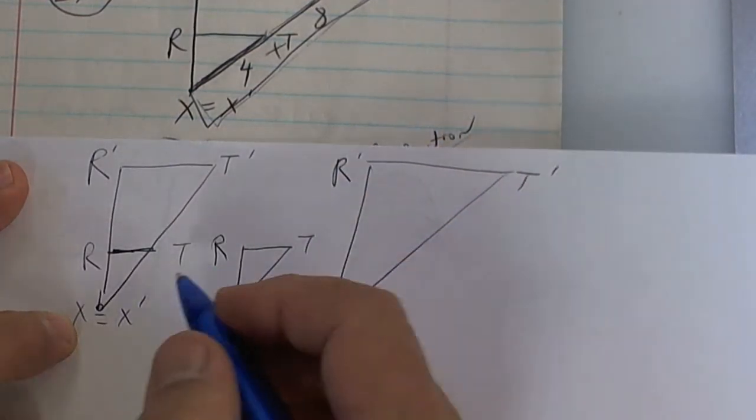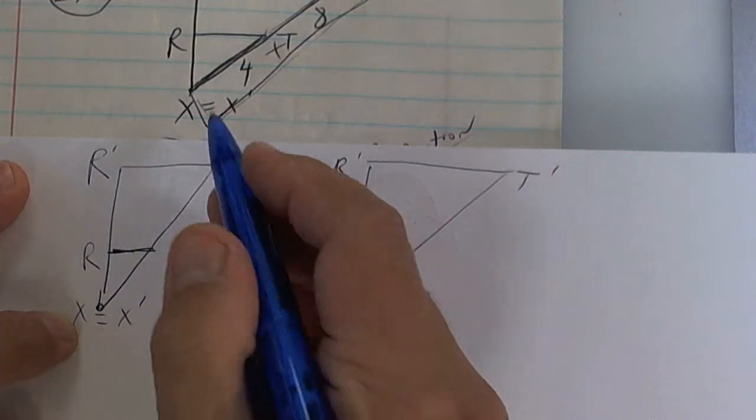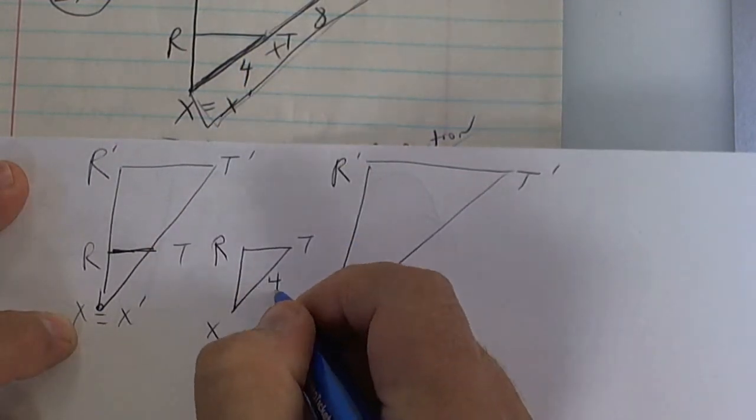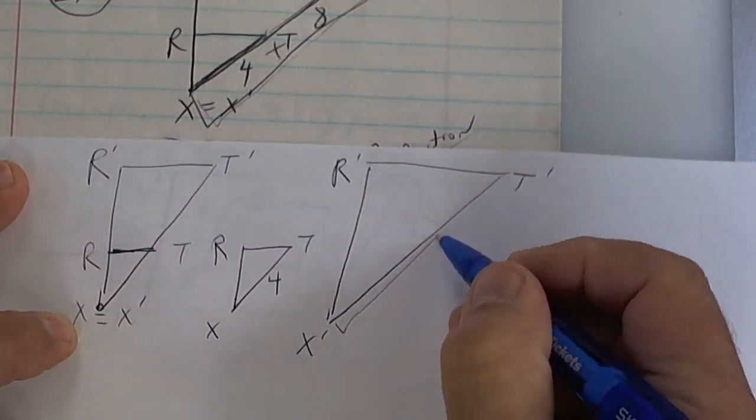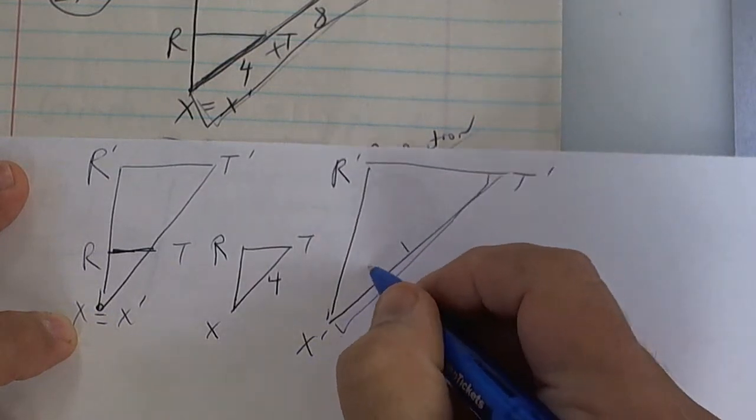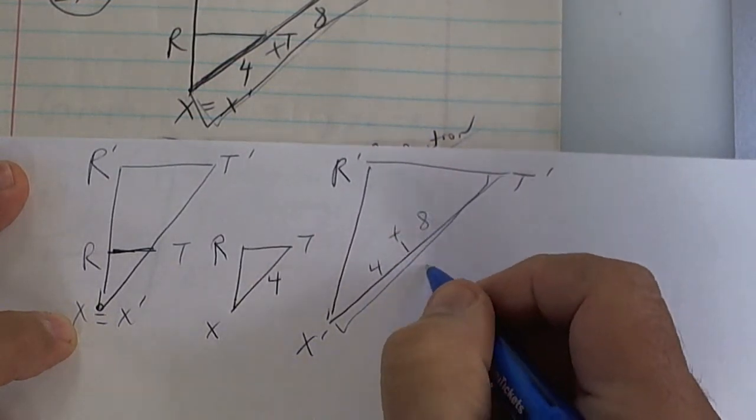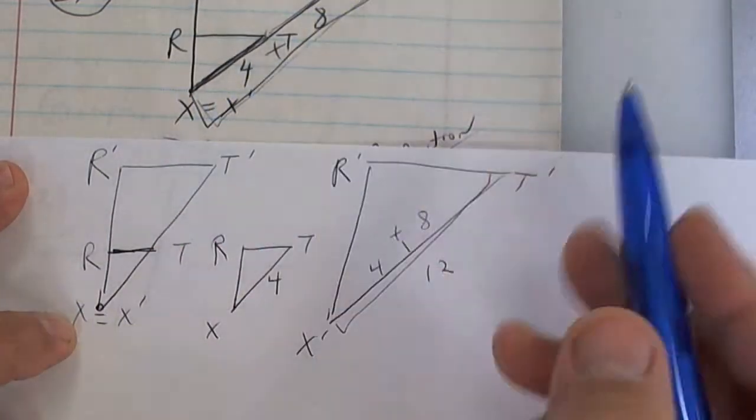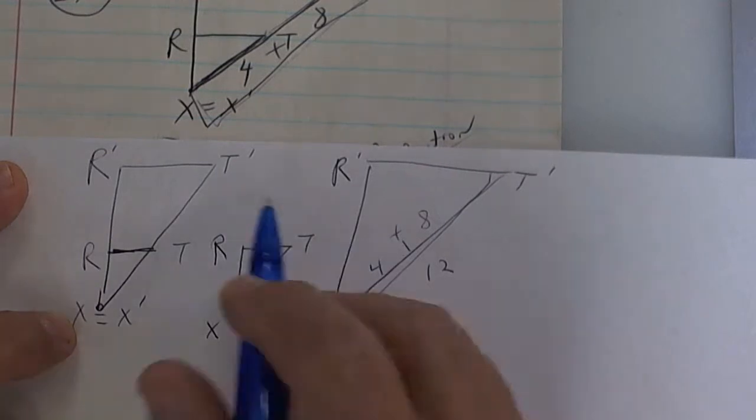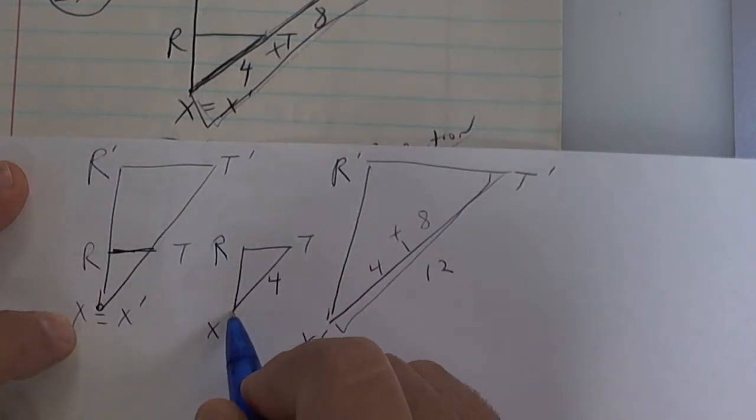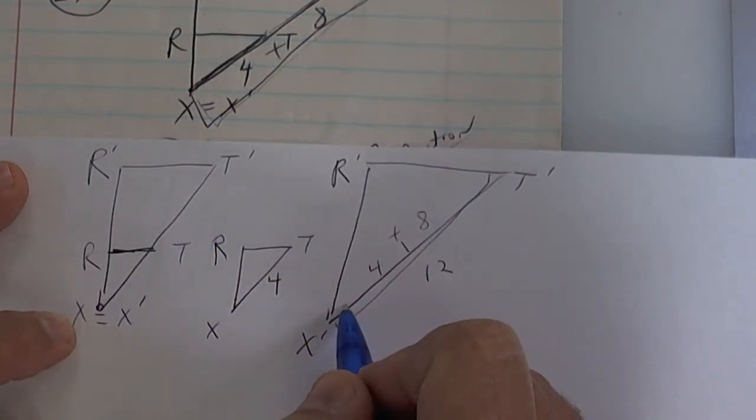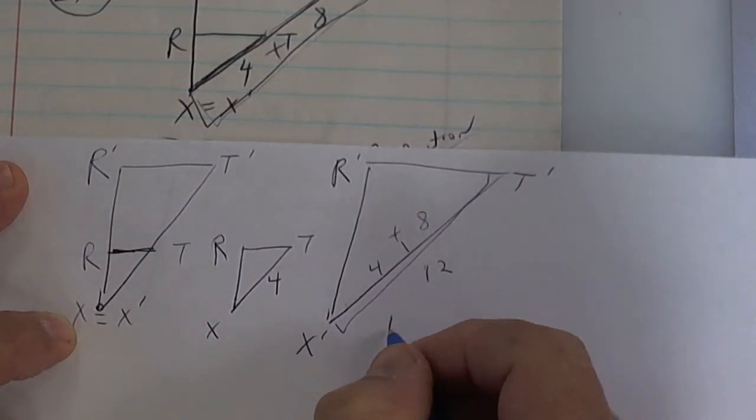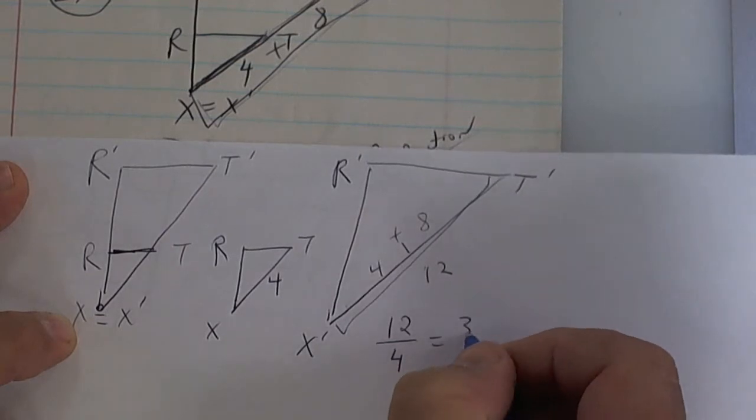This piece right here is four, so the little one is four. This whole piece from here to here is a combination of four plus eight, so make sure you add those up and get 12. Some kids only put eight but it's the whole thing.